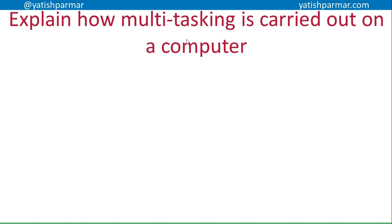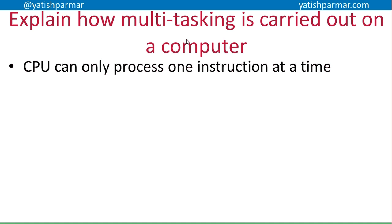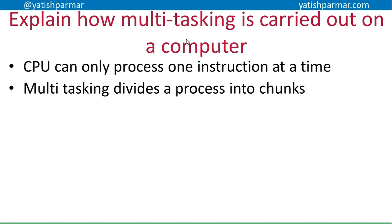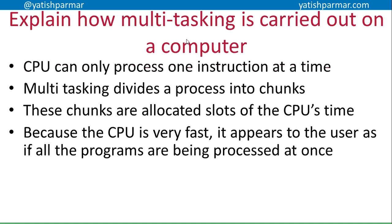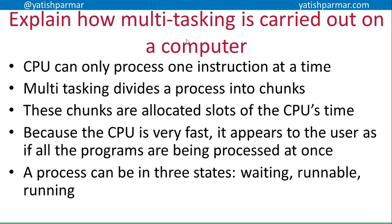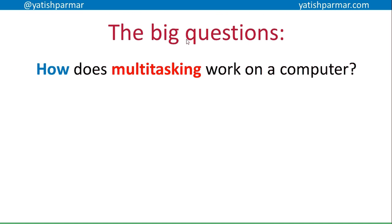A common exam question is: explain how multitasking is carried out on a computer. Here's how to answer it: the CPU can only process one instruction at a time, so it can only work on one process at a time. Multitasking divides processes into chunks where each chunk is allocated a percentage of CPU time. Because the CPU is very fast, it appears to the user as if all programs are running at once. A process can be in three states: waiting — waiting for data or user input; runnable — has the input or data, just awaiting CPU time; and running — the process is actively being processed on the CPU.